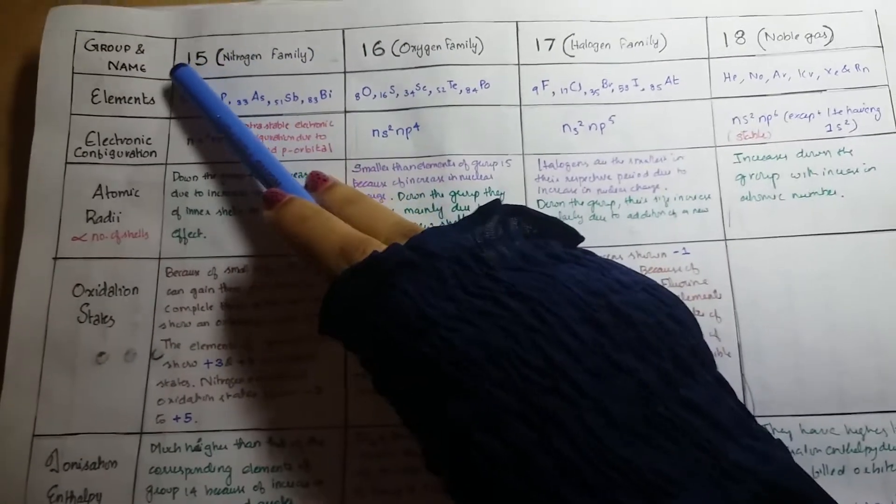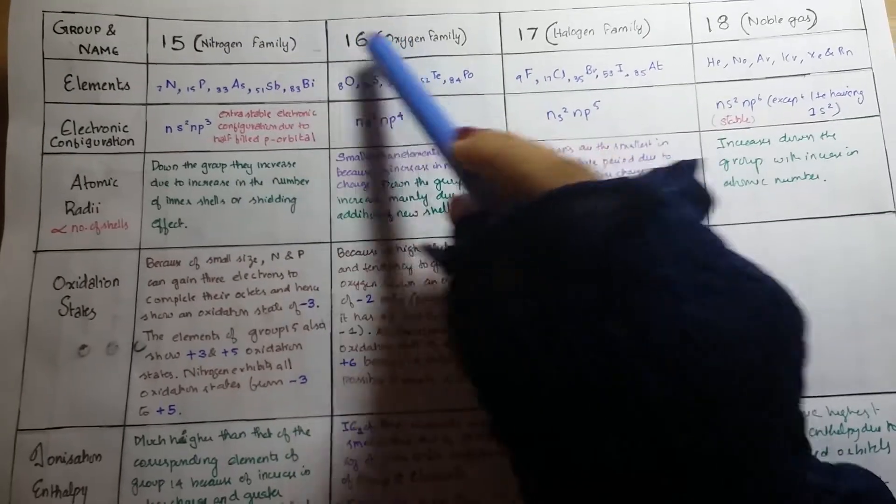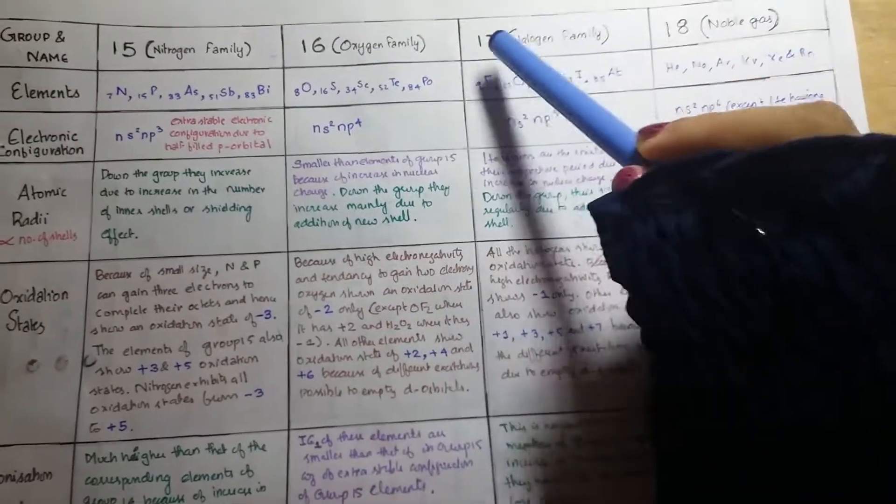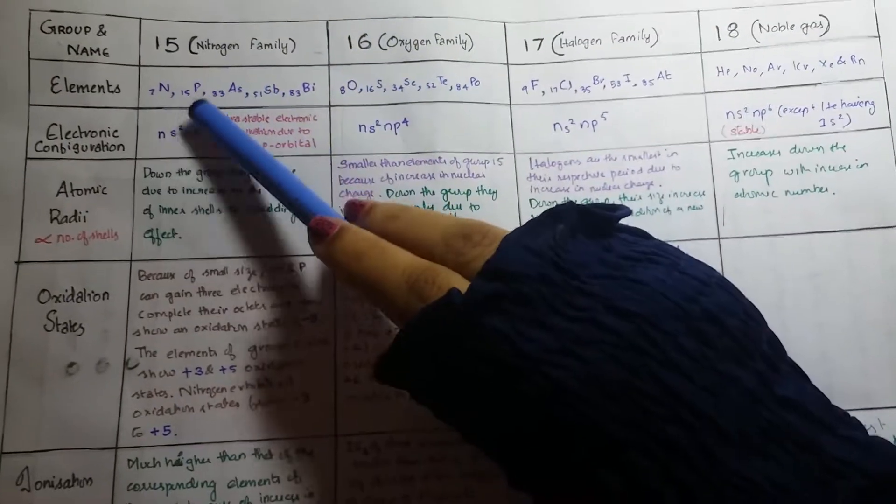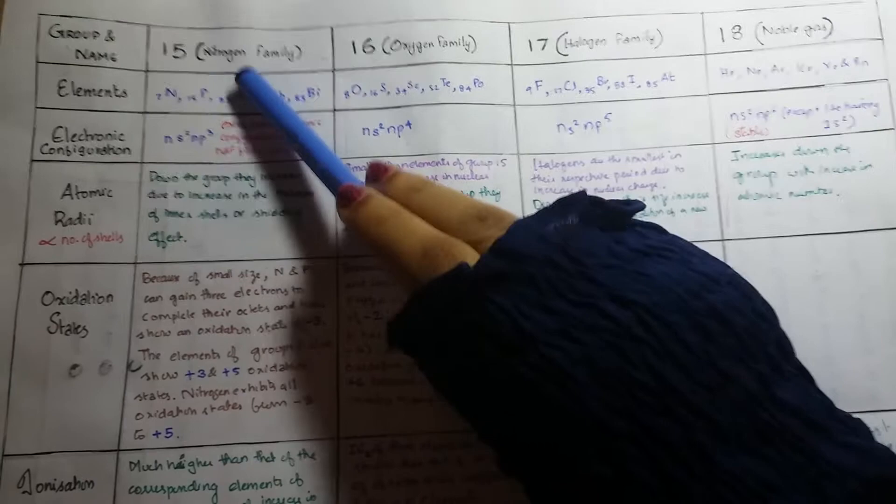Now the group name - that is group 15 nitrogen family, group 16 oxygen family, group 17 halogen family, and group 18 noble gas. So first we will look at the elements in each group.